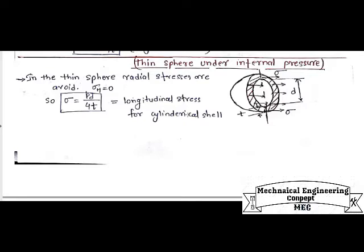Hello, welcome to you all on my channel, Mechanical Engineering Concept. Today I am going to continue my previous topic, which is cylinder and sphere under internal pressure, in which I have already discussed about cylinder under internal pressure, in which I derived the hoop stress or circumferential stress and the longitudinal stress formula. Today I am going to discuss about thin sphere under internal pressure.